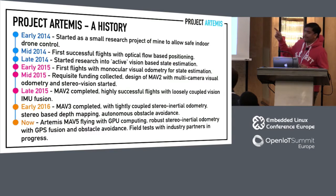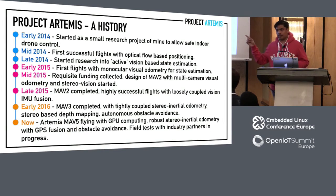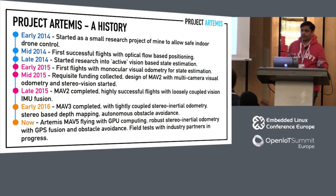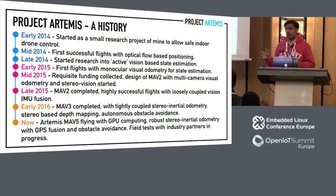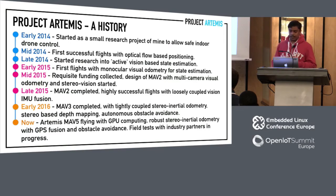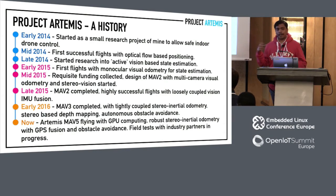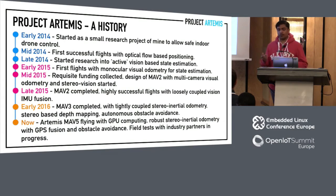In late 2014, I started research into active positioning methods, which differ from optical flow because they actually track landmarks in the environment, project them into a global frame, and localize against them — so there's no drift. In early 2015, we had first flights with monocular visual odometry: a single bottom-facing camera using active methods to track position, which improved the drift observed with optical flow.